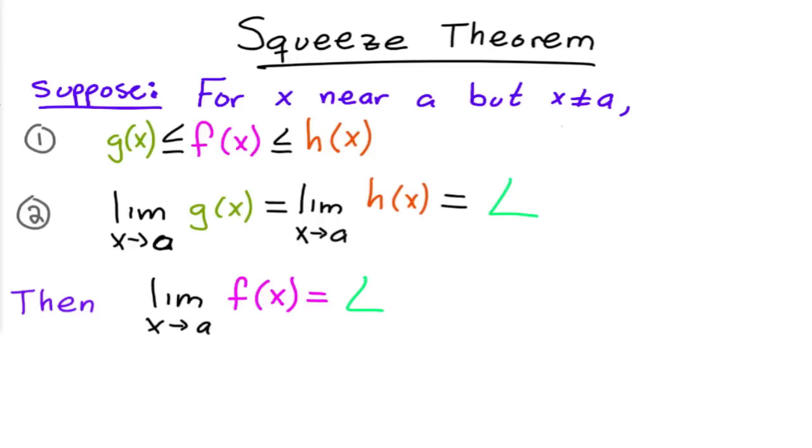Let me show you a picture of what the idea basically is. You have, let's say for example g of x, it's wiggling around something like that. And then you have h of x, and it's wiggling around something like that.